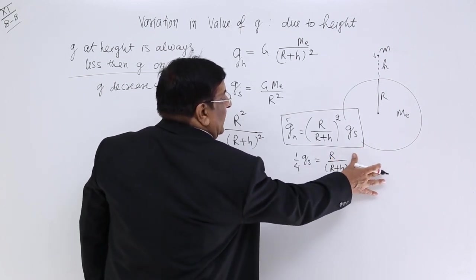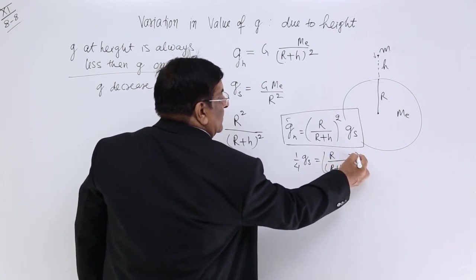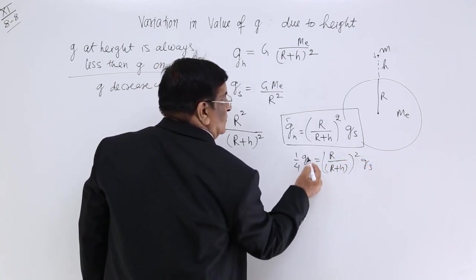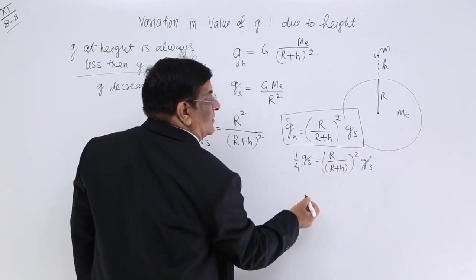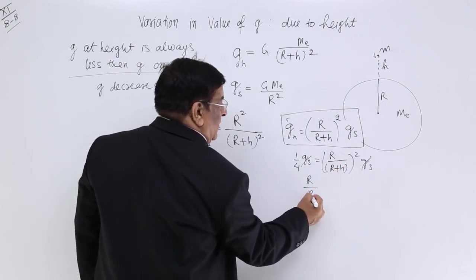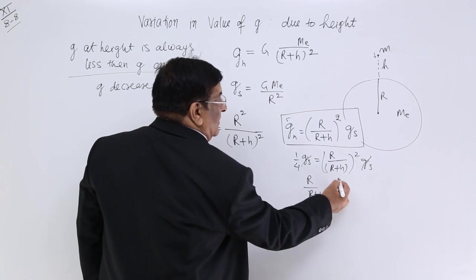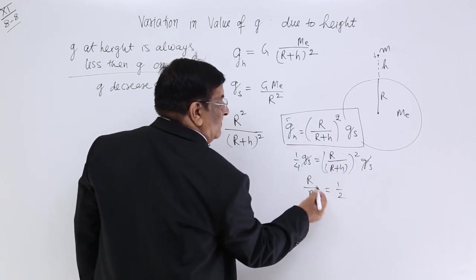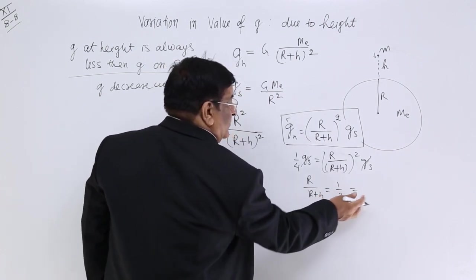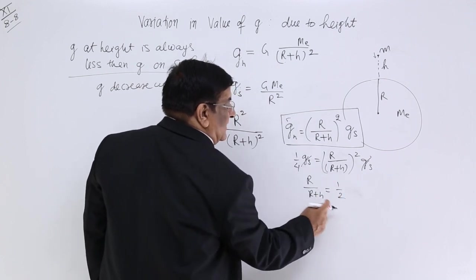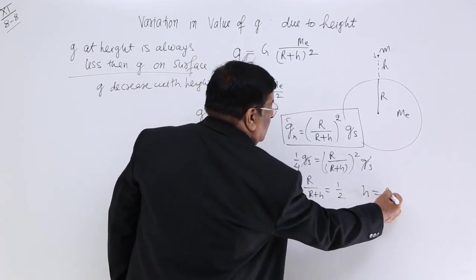Gravity at surface is equal to R square upon R plus H square, or the whole square. G_s is cancelled. Take square root of both sides. So R upon R plus H is equal to 1 upon 2. And here you can calculate 1 upon 2. So H has to be equal to R.